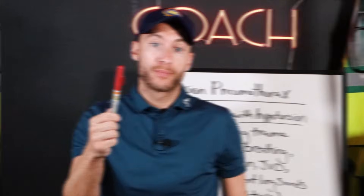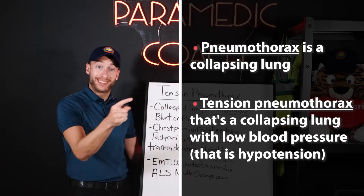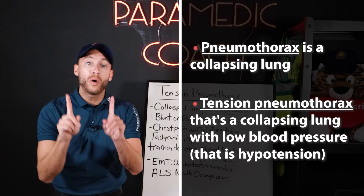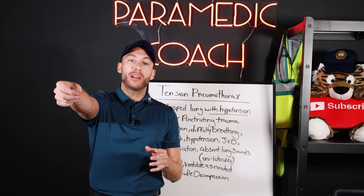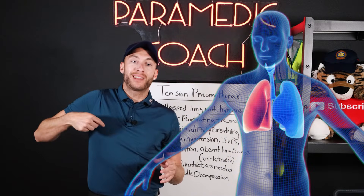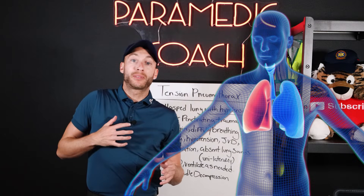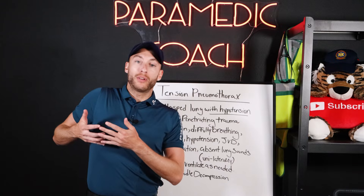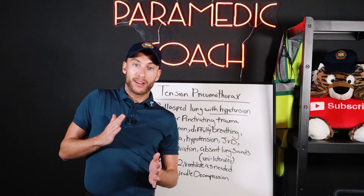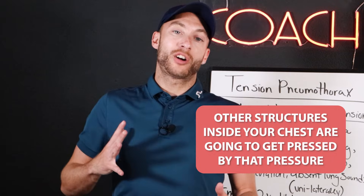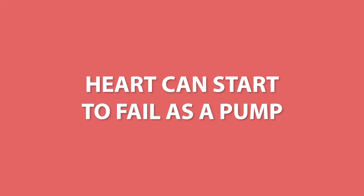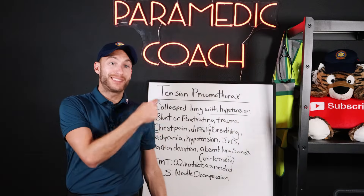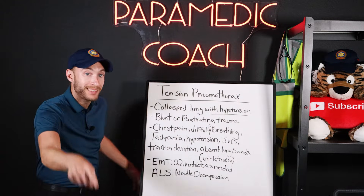This is what paramedics use to treat a tension pneumothorax. A pneumothorax is a collapsing lung. A tension pneumothorax is a collapsing lung with low blood pressure — with hypotension. Let's say a bullet enters my chest on the right side. My right lung is affected and will collapse because it got pierced. Air accumulates and pressure builds up in my chest. Over time, other structures inside your chest get compressed by that pressure, including the heart, and the heart can start to fail as a pump. This makes tension pneumothorax a type of obstructive shock.